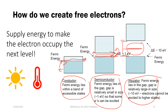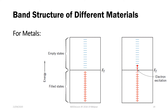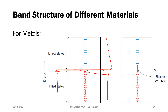For metals, the band structure shows that the filled states and the empty states are enclosed within one energy band. This makes it easy for your electron to be promoted to a higher energy state since not much energy input is needed to promote it to become a free electron capable of participating in conduction.